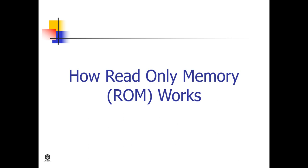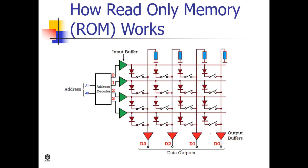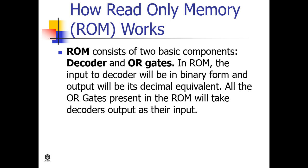A ROM operates like an array. ROM chips contain a grid of rows and columns to turn on or off. It uses a diode to connect the lines if the value is one; if the value is zero, these lines are not connected at all. Each element of the array corresponds to one storage element in the memory chip. The address input into the chip picks out a specific memory location corresponding to the array index, and the value read corresponds to the contents of the selected element. ROM consists of two basic components: a decoder and OR gates.